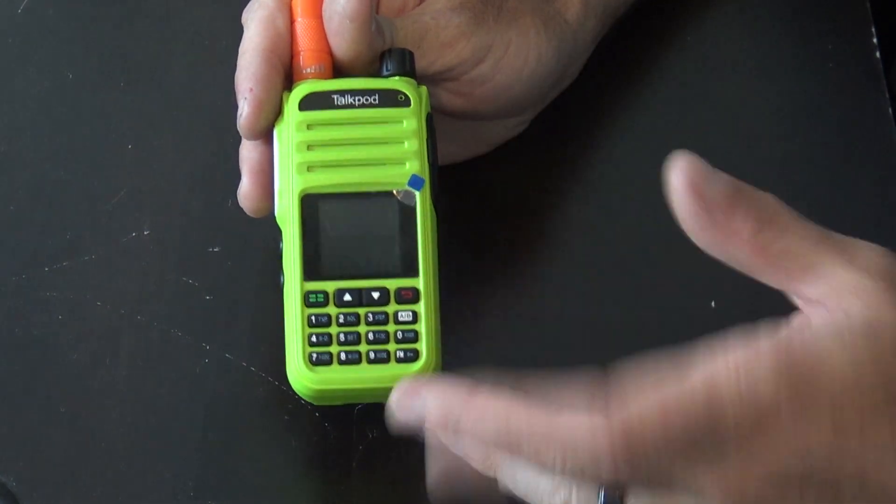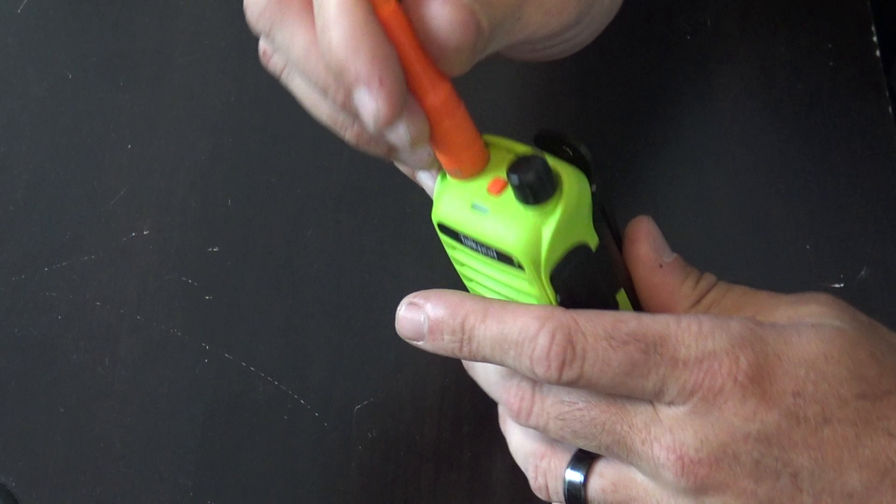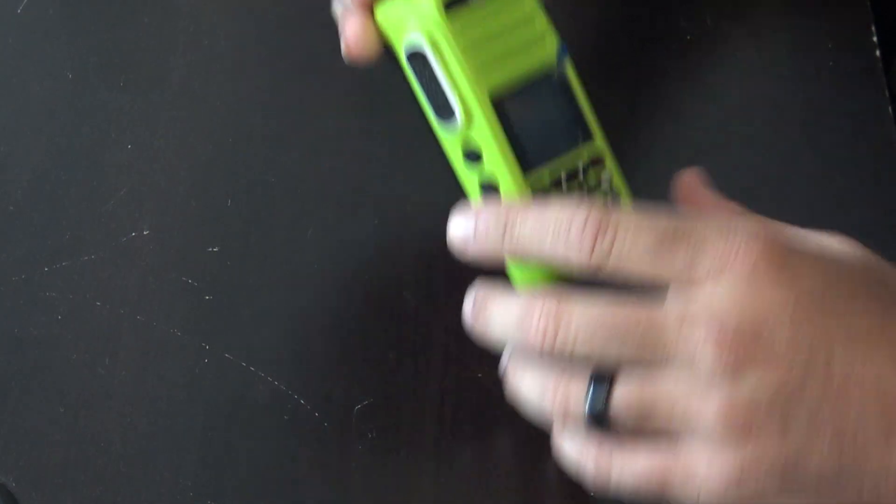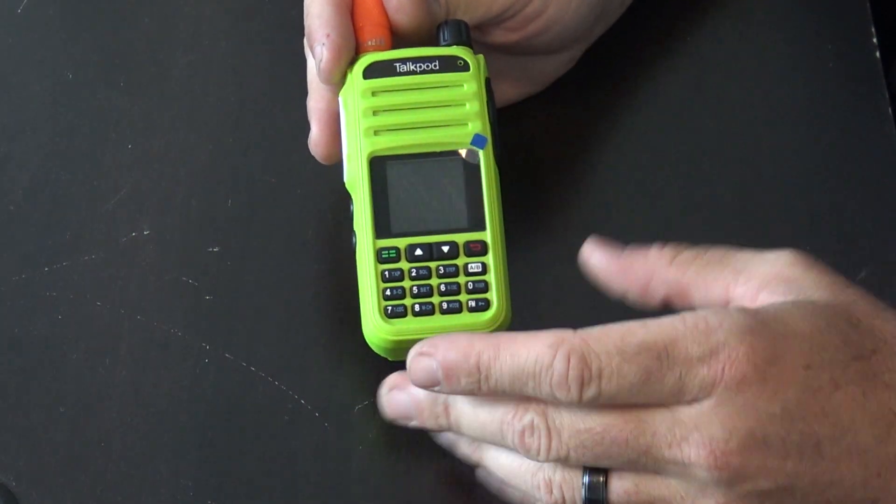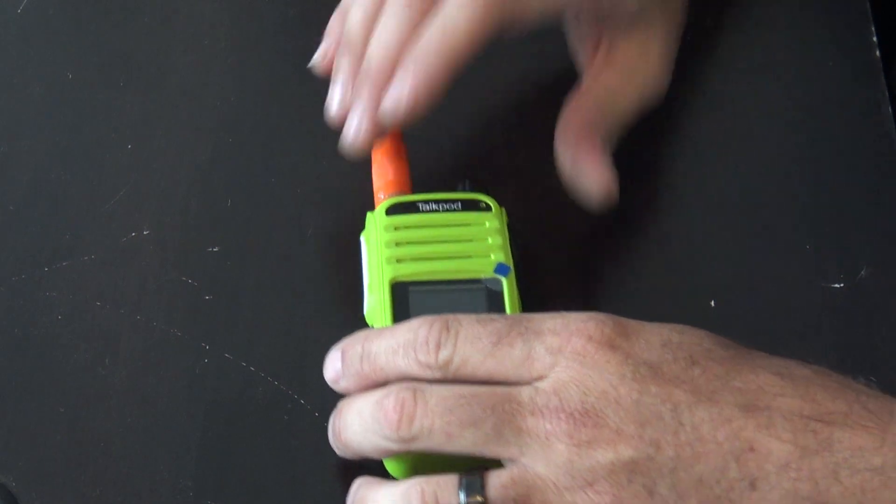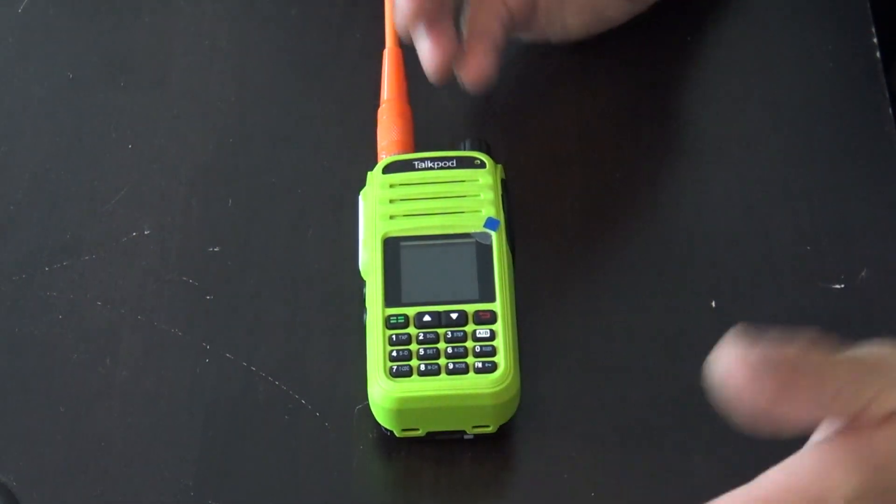I'll show you a couple of things I like about this. I do love the green color, it's pretty flashy. It doesn't come with this long orange antenna, that's mine, but it does match the button on top for SOS.